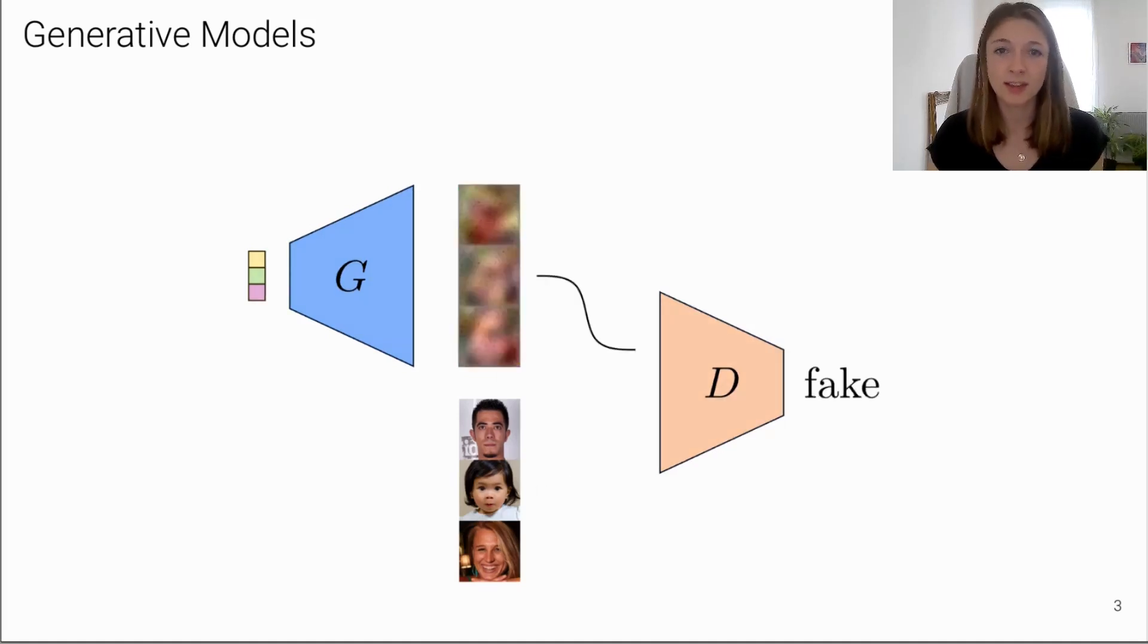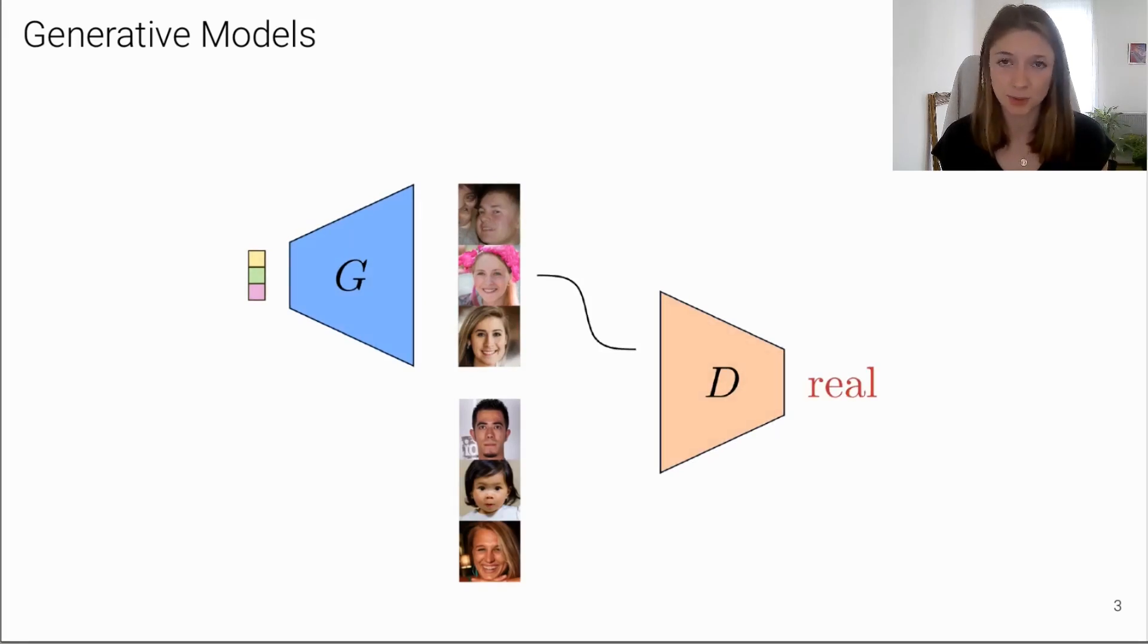Over the course of training, the generator learns to generate increasingly realistic images. In turn, this makes it more difficult for the discriminator to distinguish between real and fake images. Ideally, at the end of training, the generator samples match the data distribution and the discriminator cannot distinguish real and fake images anymore.